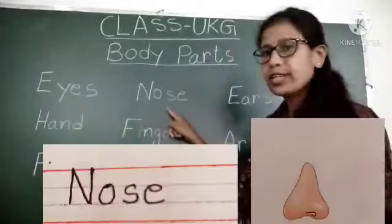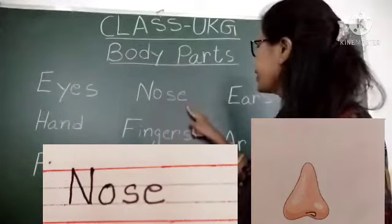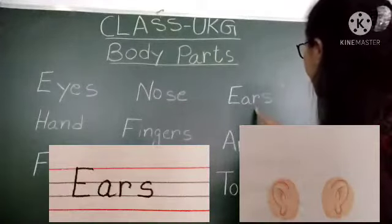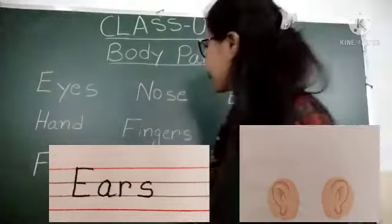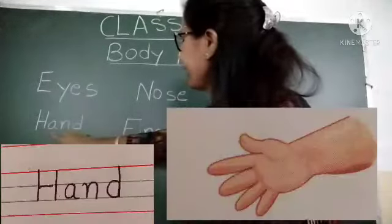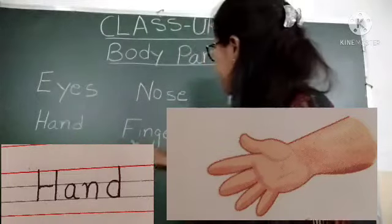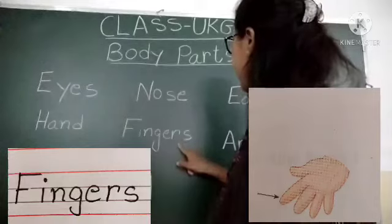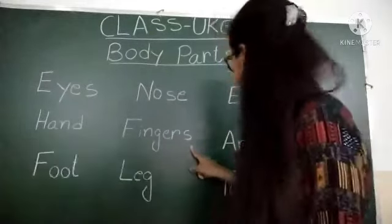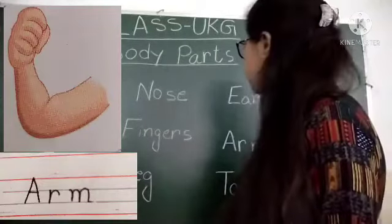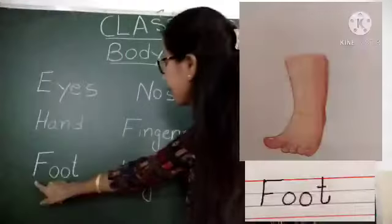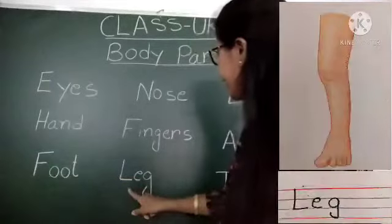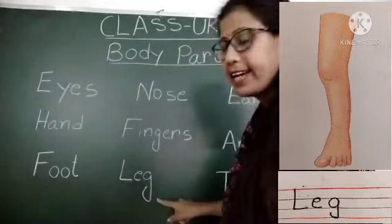First, write 'eyes' — E Y E S. Then we have 'nose' — N O S E. Then 'ears' — E A R S. Then 'hand' — H A N D. Then 'fingers' — F I N G E R S. Then 'arm' — A R M.